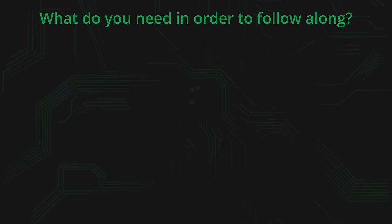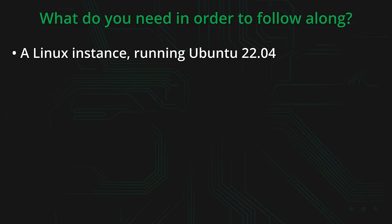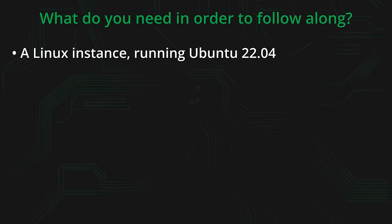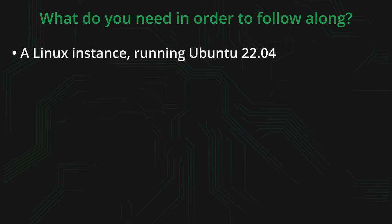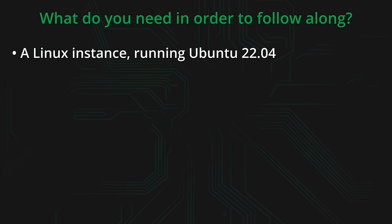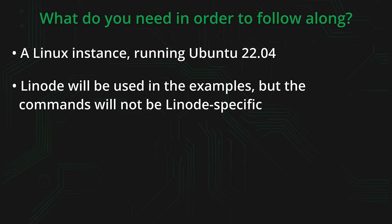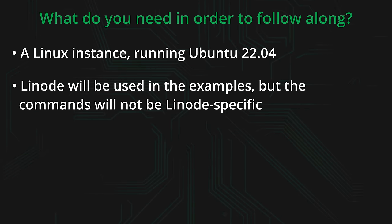So what do you need in order to get started with today's project? The first thing you're going to need is a Linux instance. More specifically, I'll show you the process of setting up GitLab Community Edition on Ubuntu 22.04. So if you plan on following along, I recommend setting up a Linux instance with Ubuntu 22.04 as well. If you don't already have a Linux instance for this project, you might want to consider checking out Linode.